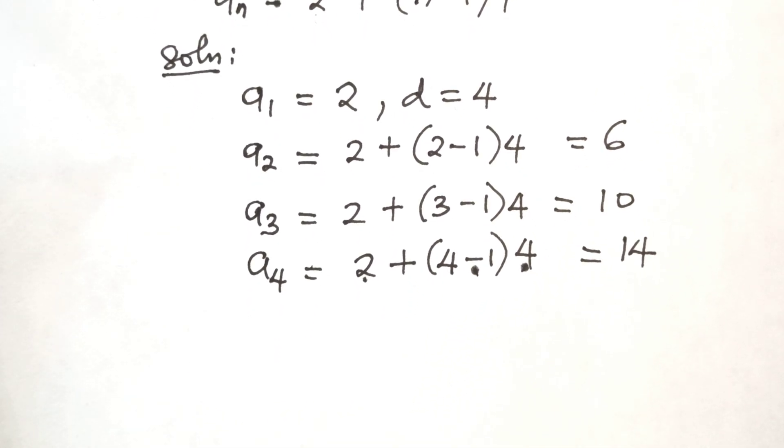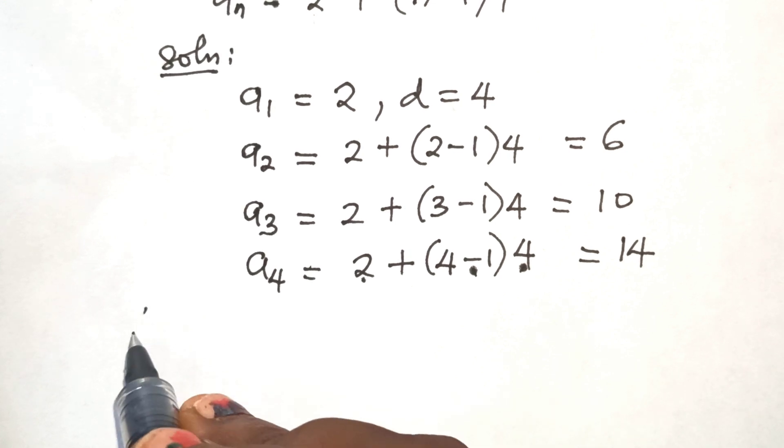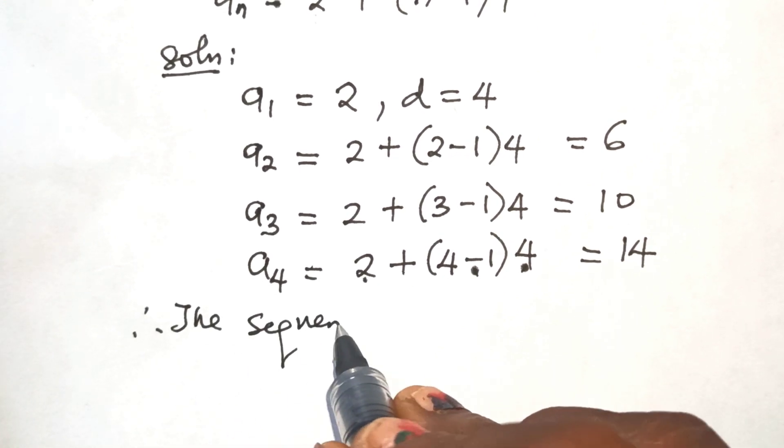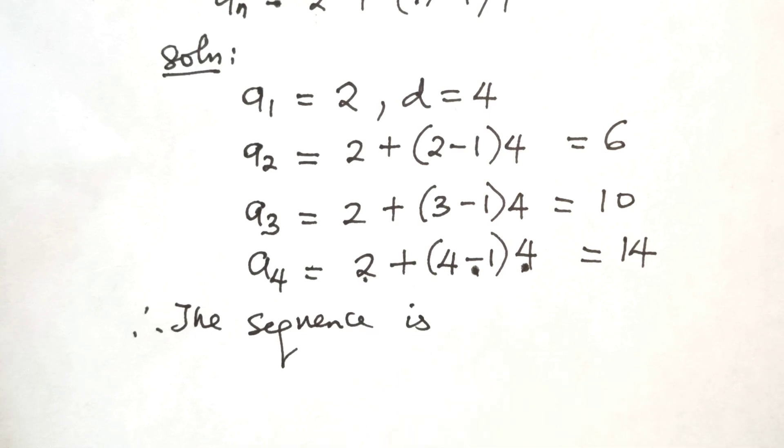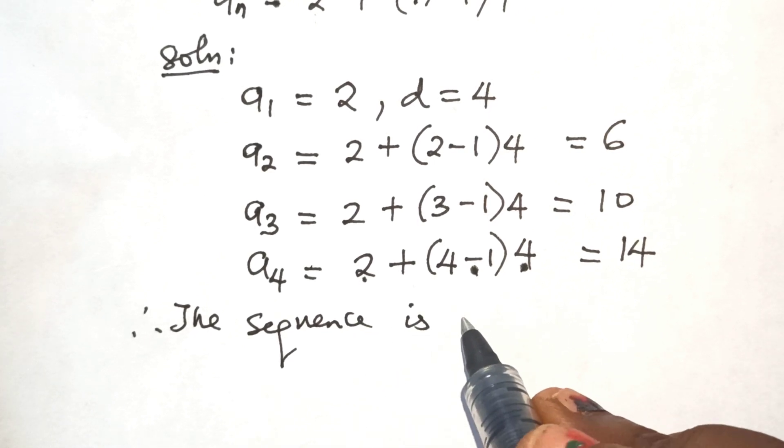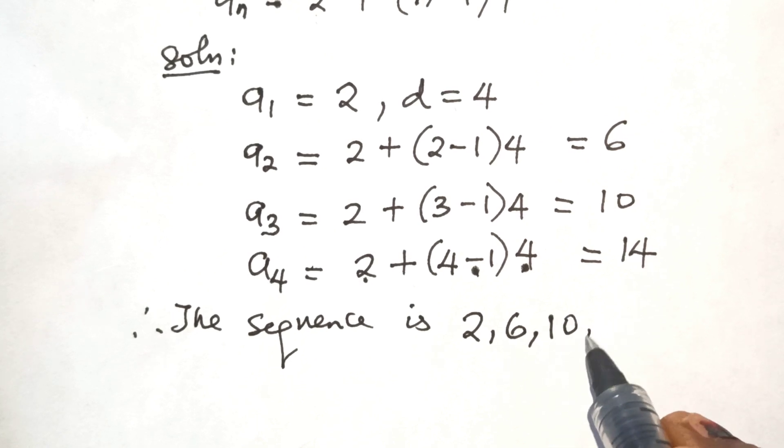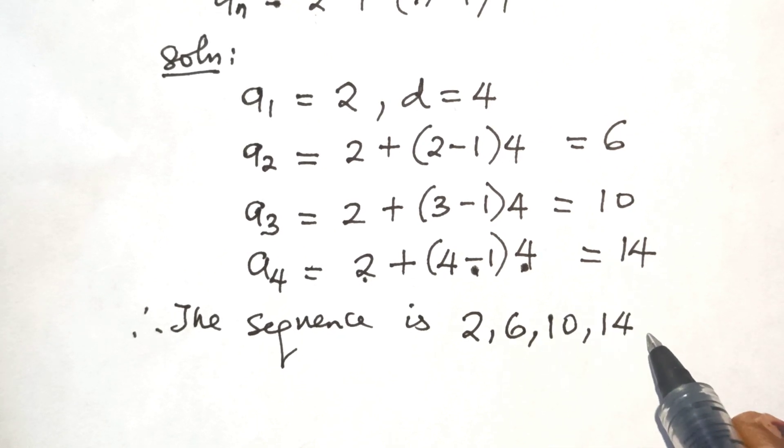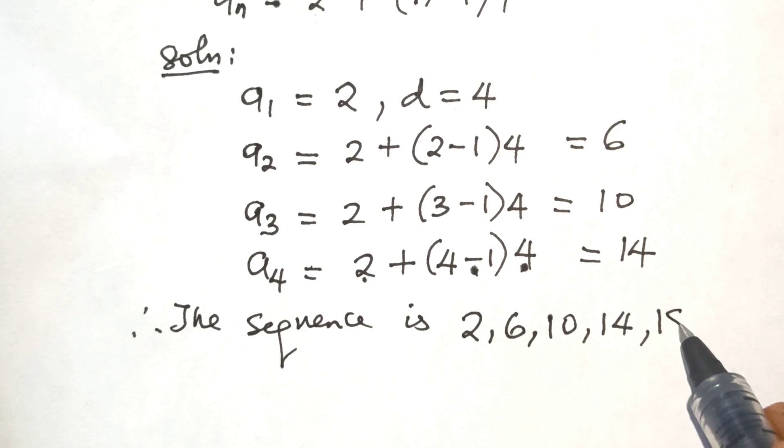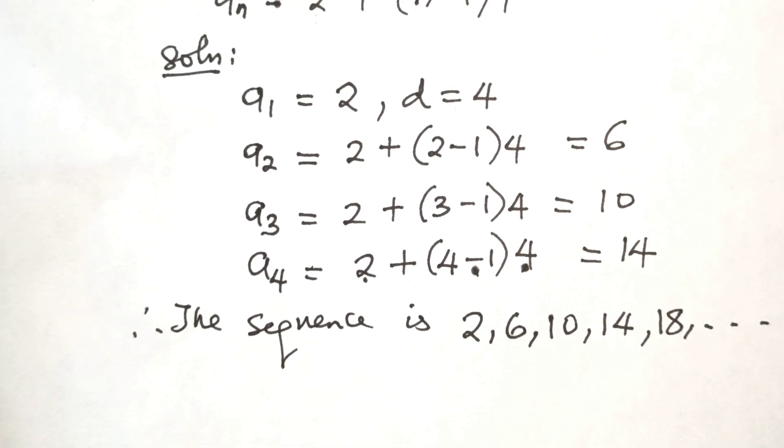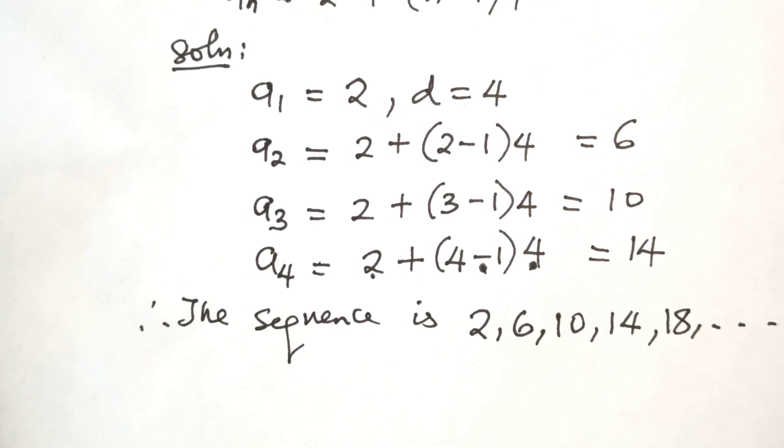Therefore, the sequence is 2, 6, 10, 14. The next term will be 14 plus 4, that's 18, and so on. That's the required sequence. Now, let's go to another example.